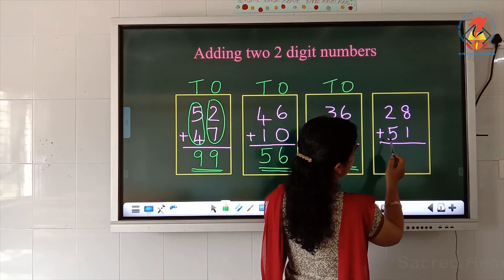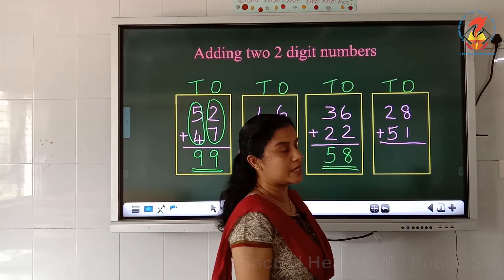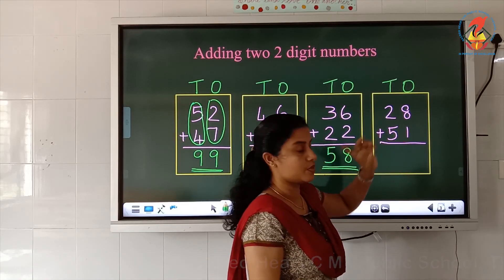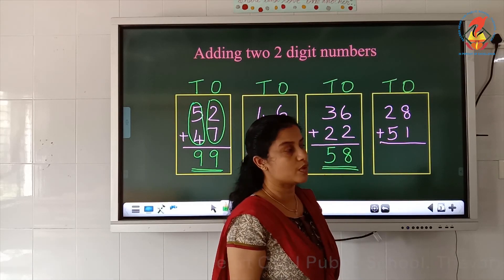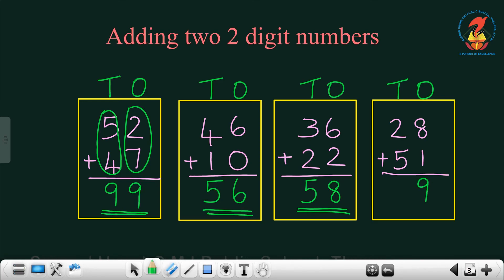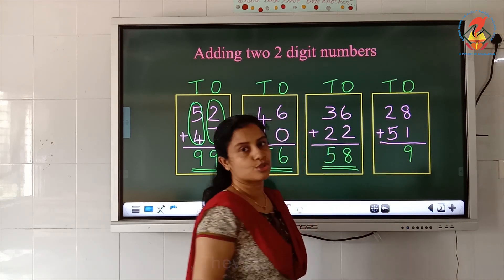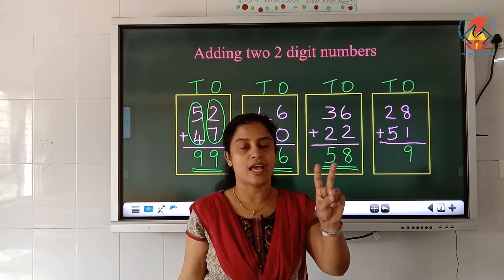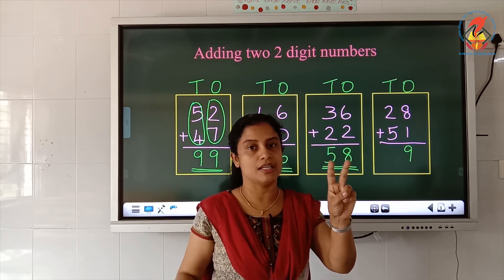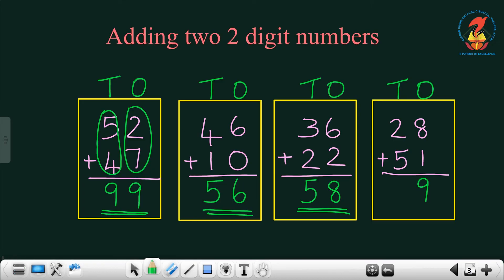28 plus 51. This is the ones place, this is the tens place. Which are the numbers in the ones place? 8 and 1. What is 8 plus 1? Adding with 1, the next number — 8 plus 1 is 9. Which are the numbers in the tens place? 2 and 5. How will you do 2 plus 5? 2 in the hand and 5 in the mind — after 5: 6, 7. The answer is 79.